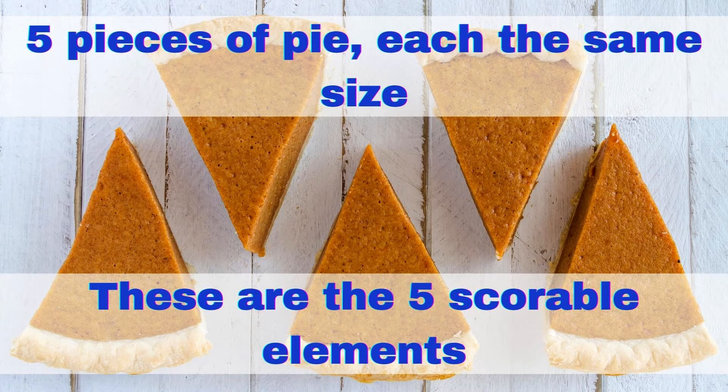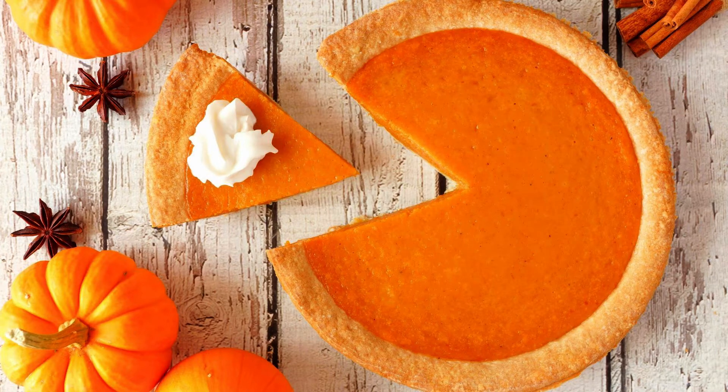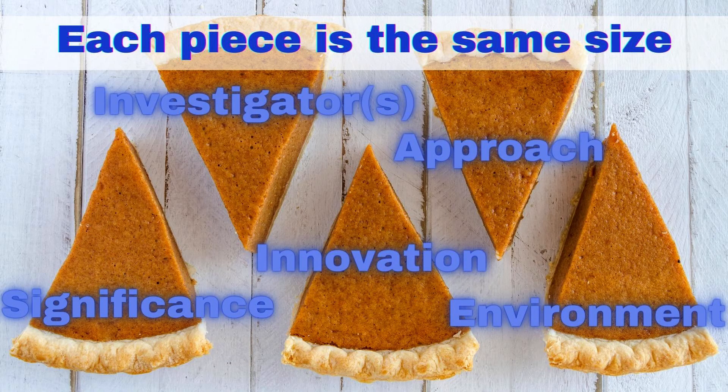We've talked about the five scorable elements — the pieces of pie. When you put these five pieces together, you have a whole pie. If your pie has a big chunk missing, you're not going to compete as well against the pies that are complete. Once your application goes into review, you're going to have three reviewers — sometimes more — who will independently read and score each proposal for these five elements. Each element receives a numerical score between one and nine, with one being a perfect score and nine being the worst possible score.